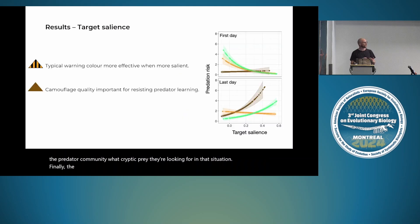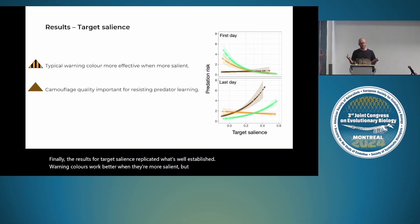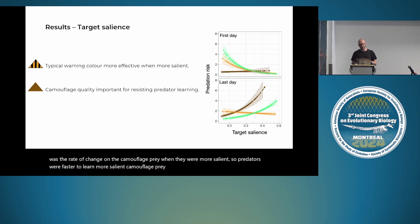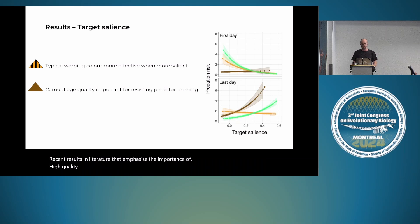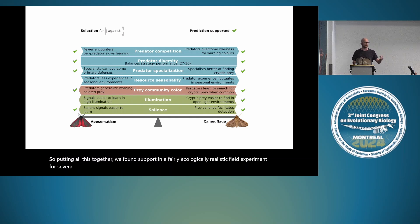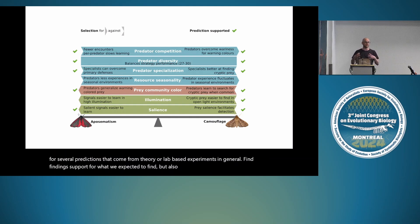For target salience, results replicated what's well established: warning colors work better when more salient. But interestingly, the camouflage strategy didn't overall work better when less salient. What was really important was the rate of change on camouflage prey when they were more salient—predators were faster to learn more salient camouflage prey. This emphasizes recent literature highlighting the importance of high-quality camouflage for resisting predator learning.